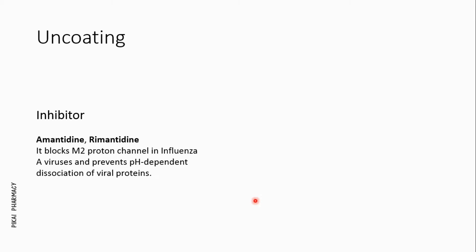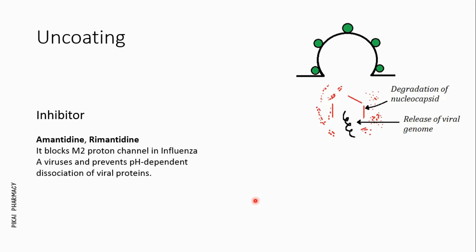Once the virus has entered the host cell, it undergoes uncoating — it uncoats itself to release the viral genome inside the host cell. During uncoating, the nucleocapsid undergoes structural modification or degradation to release the viral genome into the host cell cytoplasm. If the genome is RNA it is released into the cytoplasm; if it is DNA, it gets released inside the nucleus.